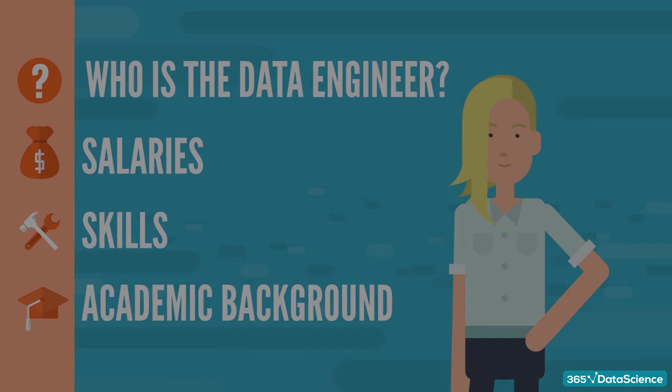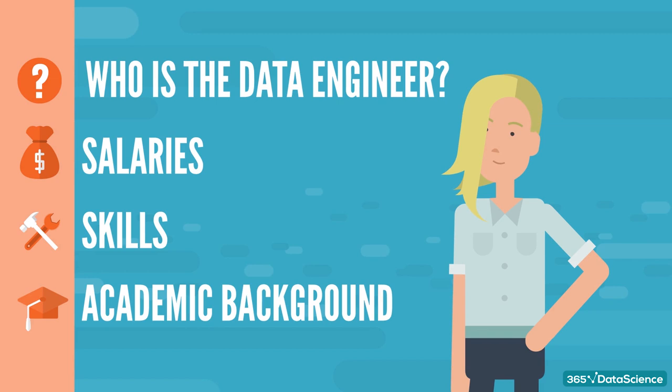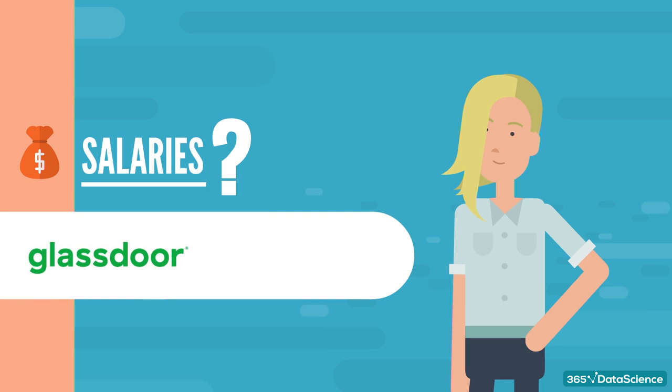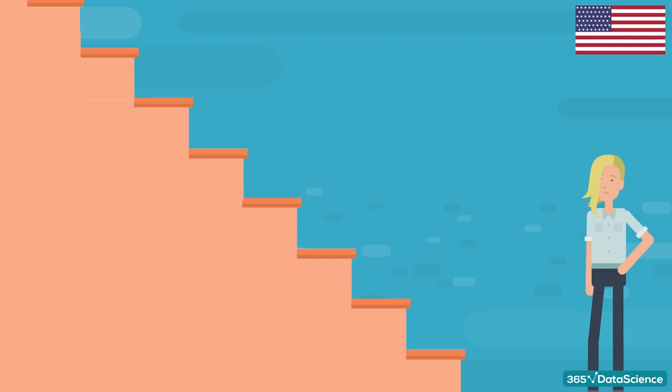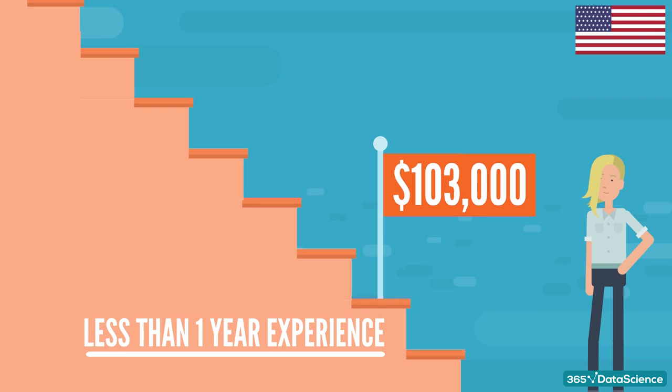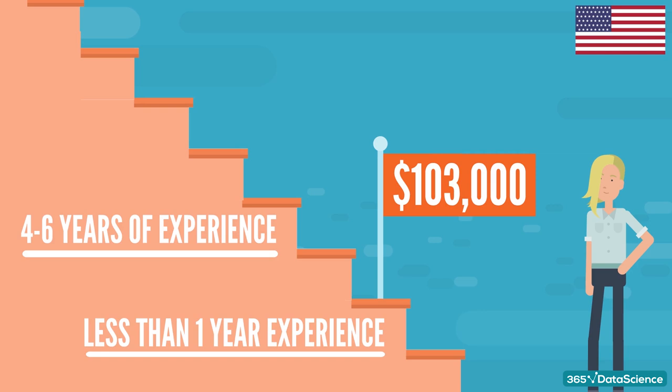So how does all this responsibility translate into the data engineer's salary? We asked Glassdoor and Payscale to give you a good answer. In the US, the average pay for a data engineer who's just getting started in his career is $103,000. Of course, once you hit the 4-6 years experience mark, you can expect your compensation to rise to $117,000. Plus, you'll be eligible for additional bonuses in the region of $10,000.